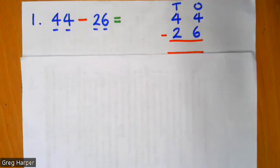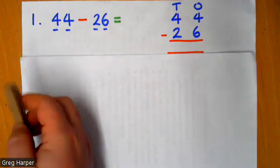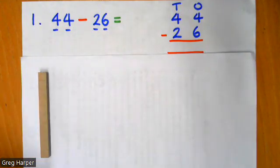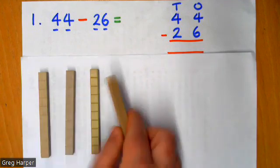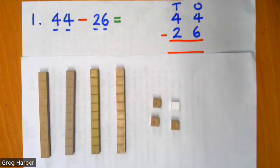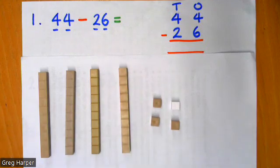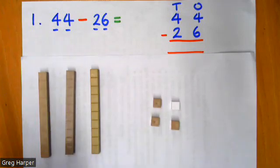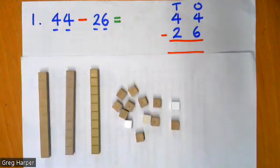Now, if we were to use physical resources, this is what that would look like. I've got my 44. I've got four tens and I've got four ones. And I want to take away six ones from my number. However, I can't do that because I only have four. So what I can do is I can exchange one of my ten sticks for 10 more ones. So I'm going to take away one ten stick and I'm going to exchange it for 10 more ones.